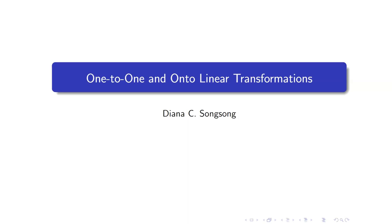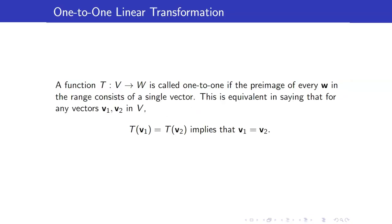In this lesson, I am going to discuss 1-to-1 and onto linear transformations. A function is said to be 1-to-1 if the pre-image of every element in the range consists of a single vector.